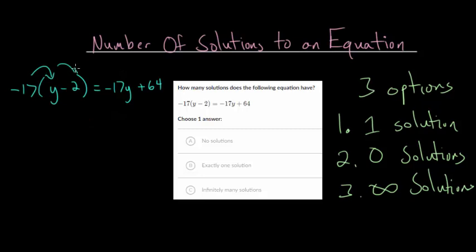And, when I do that, I get minus 17y, since they're multiplied, and minus 17 times negative 2 would be positive 34. And, this equals minus 17y plus 64.